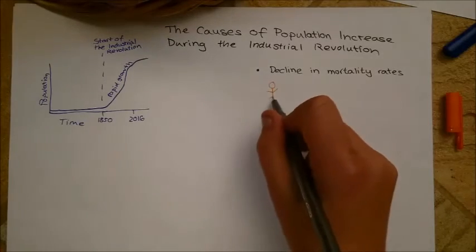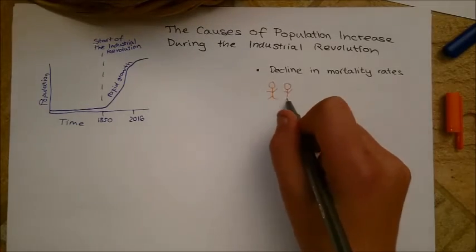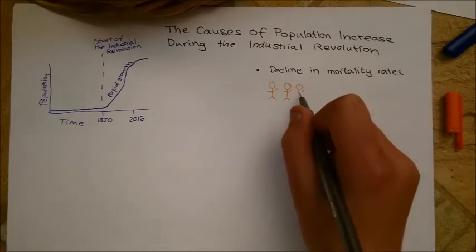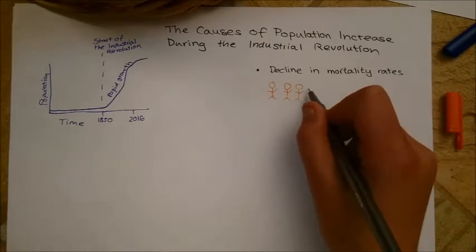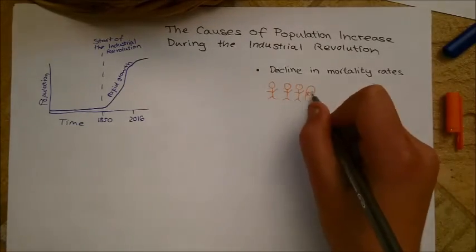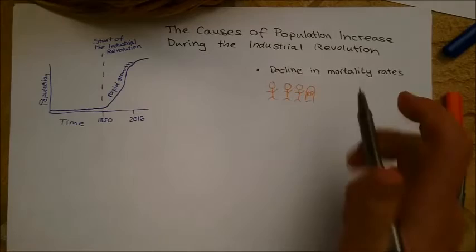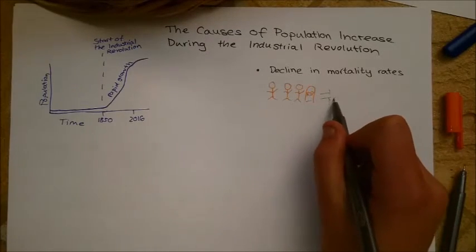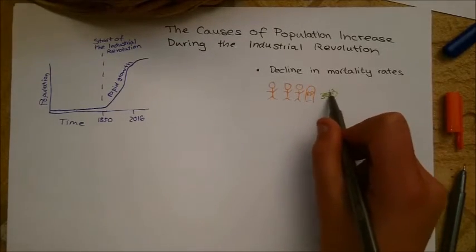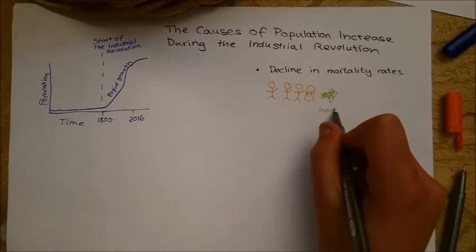Because of the industrial revolution, technology improved, leading to improved food supply, water supply, sanitation, medication and access to doctors, meaning that diseases could be treated and there was less starvation and malnutrition.